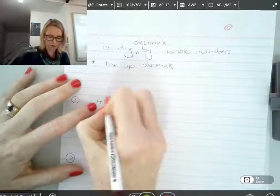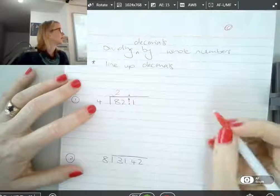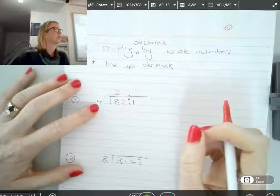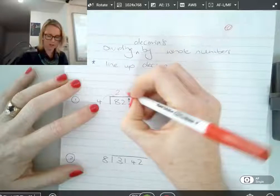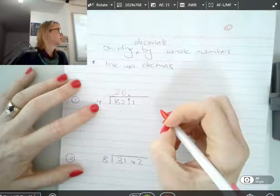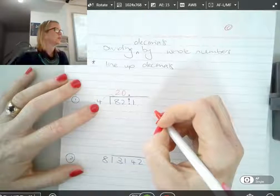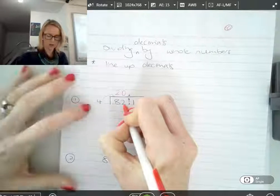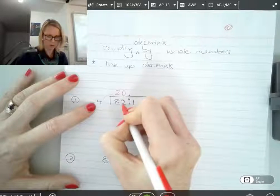All right, so this comes back to your knowledge of dividing whole numbers and how to use the decimal division. So how many times does 4 go into 8? 2 times evenly? Yes. How many times does 4 go into 2? 0. Do I have to write 0? Yes.